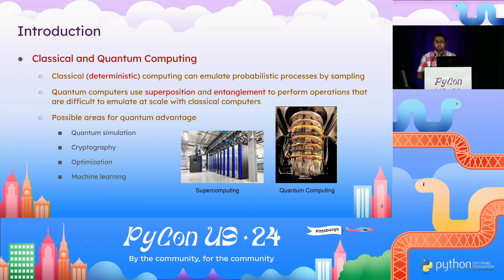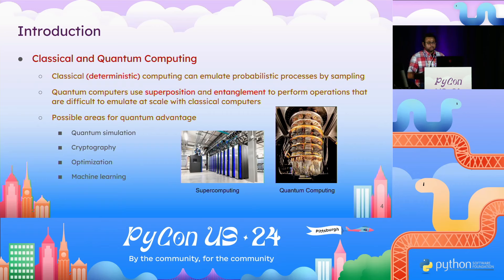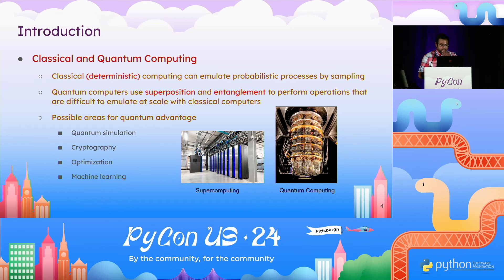Possible areas where we can see quantum advantage are quantum simulation — simulating chemical processes or results of reactions. Cryptography: one notorious quantum algorithm is Shor's algorithm, which, if we have a powerful quantum computer, can be used to break encryption systems like RSA, potentially threatening the internet. Other possible fields are optimization, like the traveling salesman problem, max cut graphs, etc. And finally we have machine learning, where quantum computing promises significant impact, and machine learning itself has had a significant impact in the technology we have today.